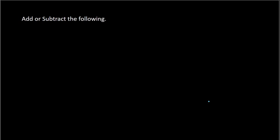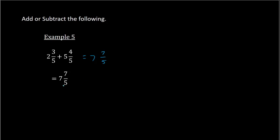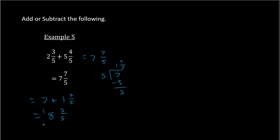Next we're going to review addition and subtraction. Starting with the basic case where you have the same denominator — you can add right away. Here we have mixed numbers: adding the whole numbers 2 plus 5 gives 7, and adding 3/5 plus 4/5 gives 7/5. So we have 7 and 7/5. Since 7/5 is an improper fraction, we convert it: 7 divided by 5 is 1 remainder 2, so 7/5 = 1 and 2/5. Then 7 plus 1 and 2/5 gives us 8 and 2/5 as our solution.